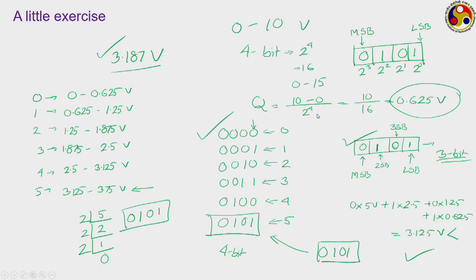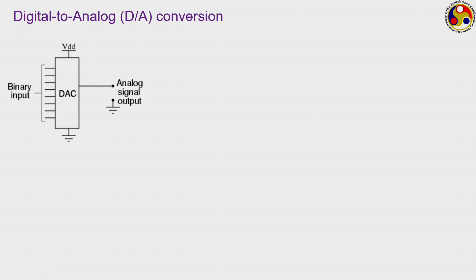Now let us move to the topic of today's discussion: digital-to-analog conversion. In digital-to-analog conversion, we have a binary input which gets converted to an analog signal output, generally in the form of a voltage. The application of such devices is probably more common than analog-to-digital converters, because in most cases when you want to store an analog signal you convert it to digital for transmission advantages. However, quite often the final representation is needed in analog form, so stored or processed binary data needs to be converted back to analog.